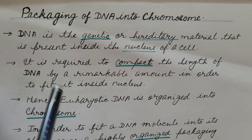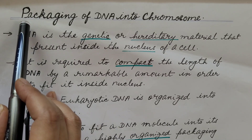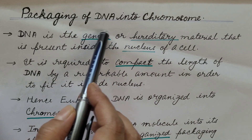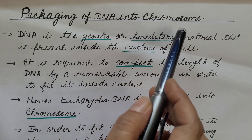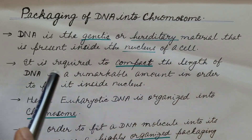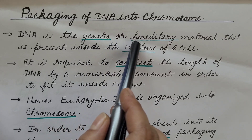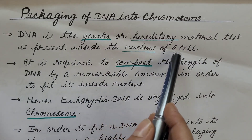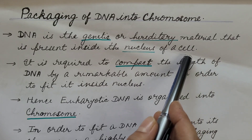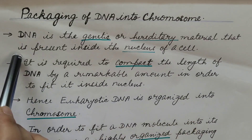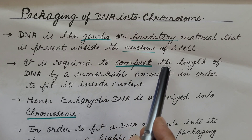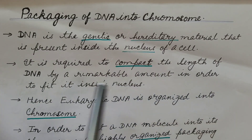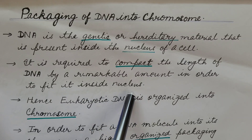Hello friends. In this video we are going to discuss about packaging of DNA into chromosome — that is, how DNA is packed into chromosome. We know that DNA is the genetic or hereditary material present inside the nucleus of a eukaryotic cell. It is required to compact the length of DNA by a remarkable amount in order to fit it inside the nucleus.